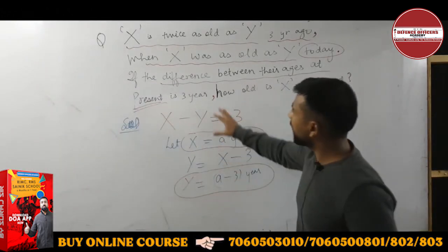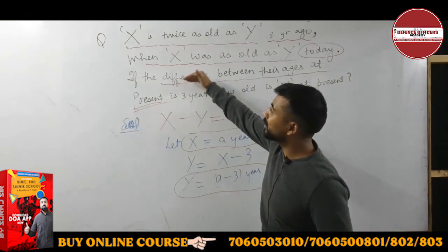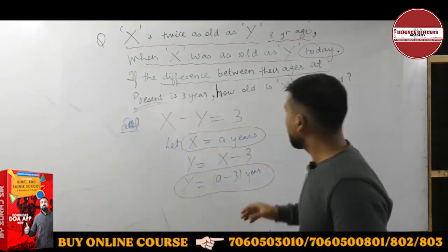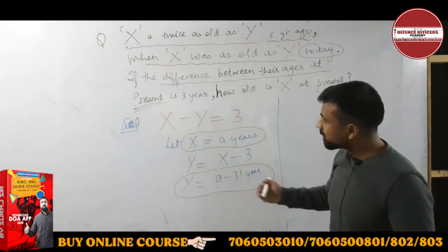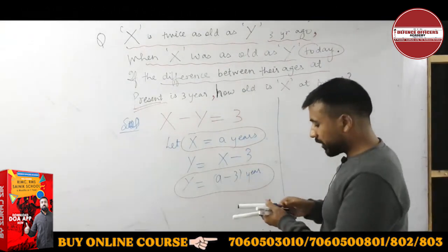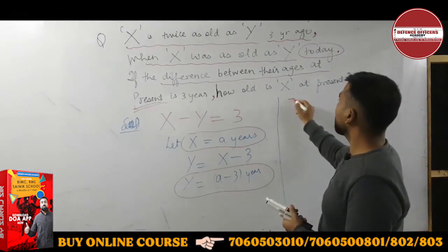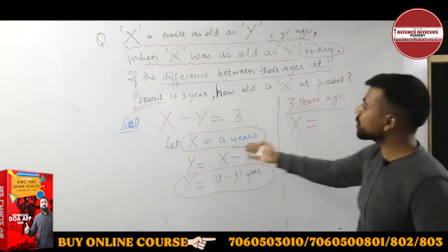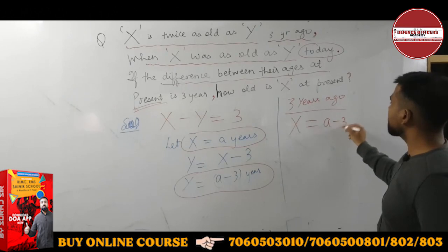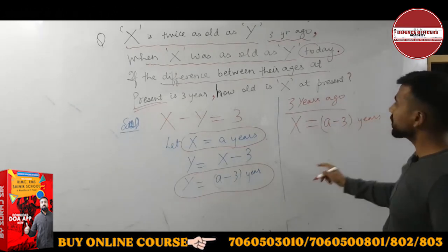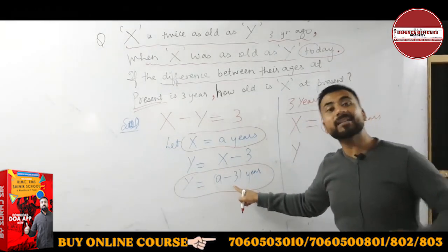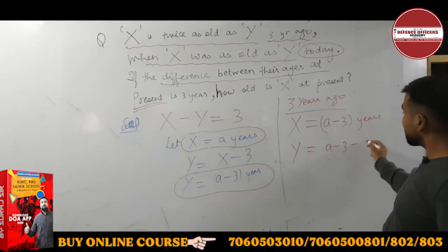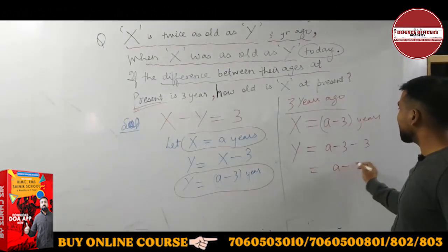We have to write the present condition first. Now, 3 years ago: look at what the ages were 3 years ago. X's present age is 'a' years, so 3 years ago X's age was a minus 3. Y's present age is a minus 3, so 3 years ago Y's age was a minus 3 minus 3, which equals a minus 6 years.